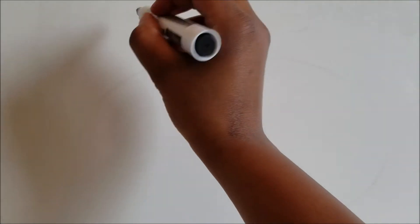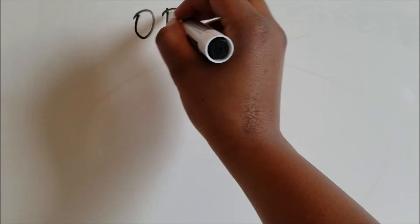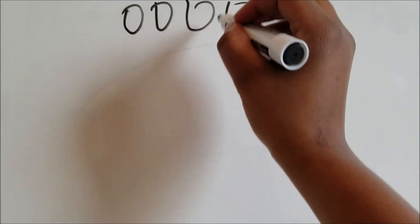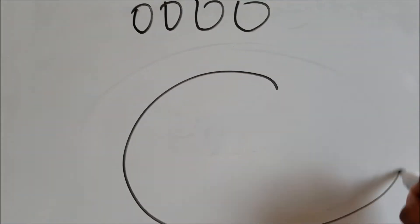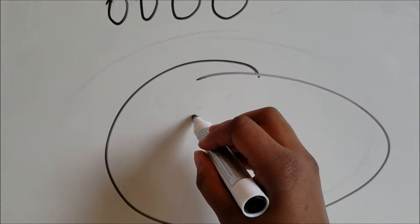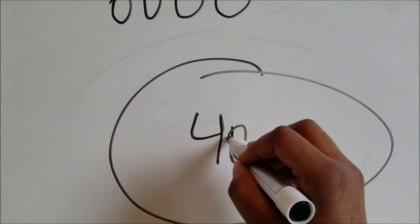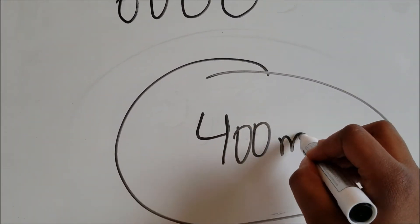For those who don't know what a 4x800 is, that's where you and three other people run around a 400-meter track two times. That's about a standard high school track.